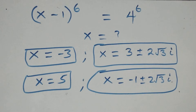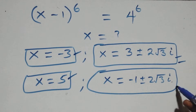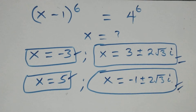Therefore, altogether in this problem we have 6 solutions: 2 real solutions (x equals minus 3 and x equals 5), 2 complex solutions from the first case, and 2 complex solutions from the second case. Thank you for watching — don't forget to subscribe for more videos, turn on the notification bell, share this video, give a thumbs up, and put your comments. See you next class, bye for now.